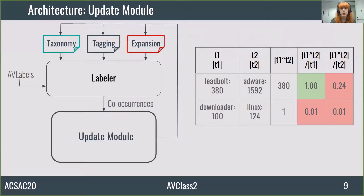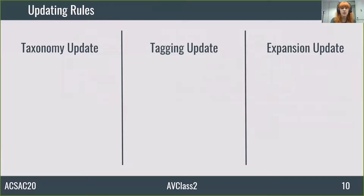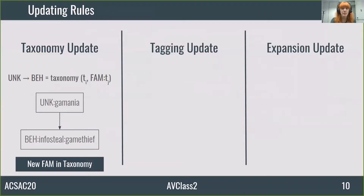Let's see how co-occurrences update the taxonomy and the tagging and expansion rules. From the strong co-occurrences, we update the taxonomy and tagging and expansion rules. The most important rules are those that include new knowledge on the graph, that is, from unknown tags. For instance, a rule that goes from an unknown to a behavior most likely means that it is a family like Gemenya which behaves as a game thief. This rule includes Gemenya as a new family in the taxonomy.